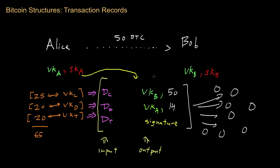You may notice a slight discrepancy: Alice started with 65 coins on the input side, but on the output side only 50 plus 14, or 64 coins, are being accounted for. What happens with this one remaining coin? That coin is actually going to be used as a transaction fee. Alice is saying that this one leftover coin should be provided as a transaction fee to what's known as a Bitcoin miner.